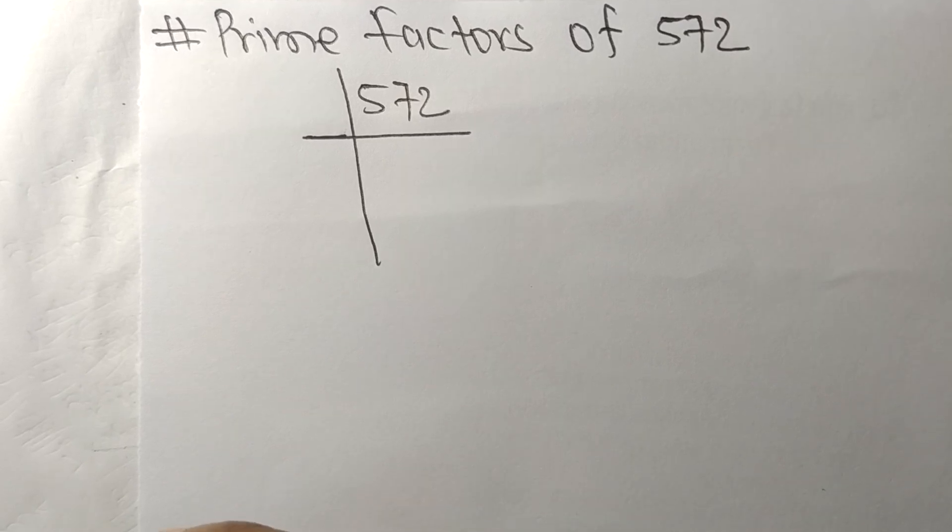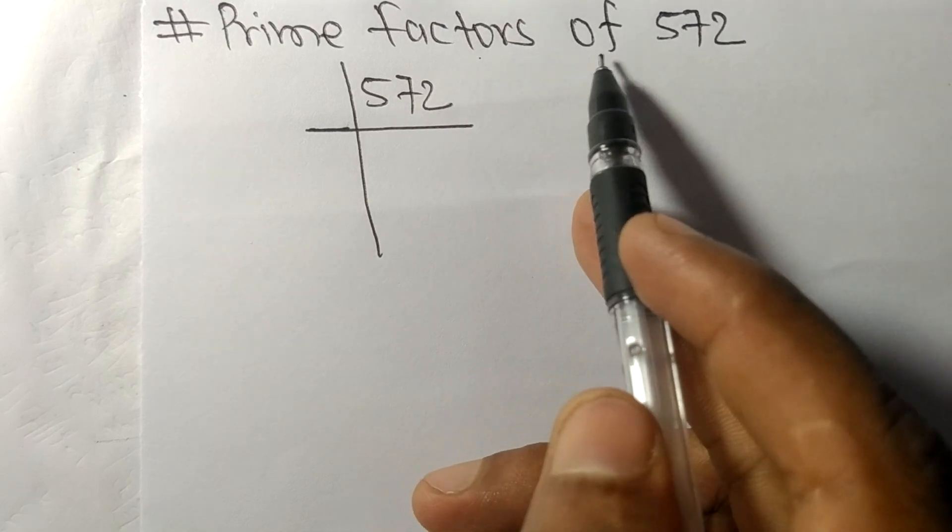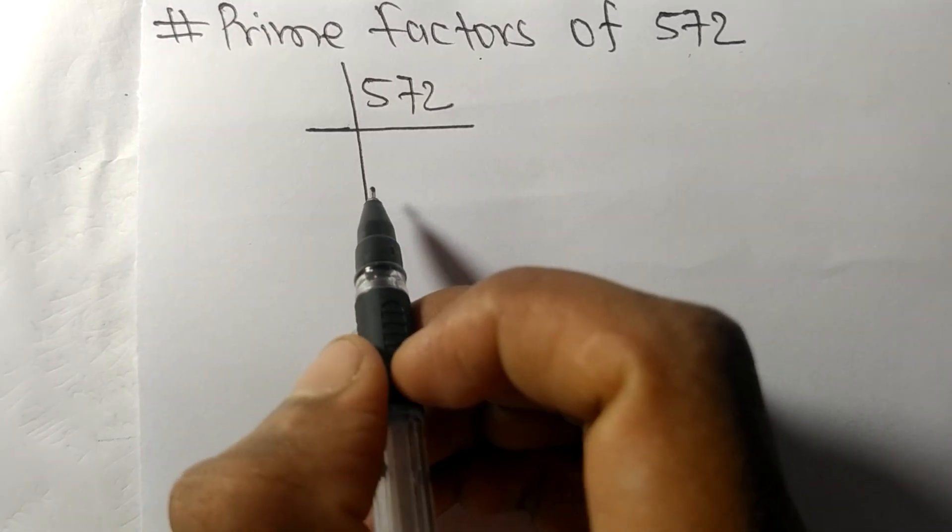So today in this video we shall learn to find the prime factors of 572. So at last it contains an even number 2, so this whole number is divisible by 2.